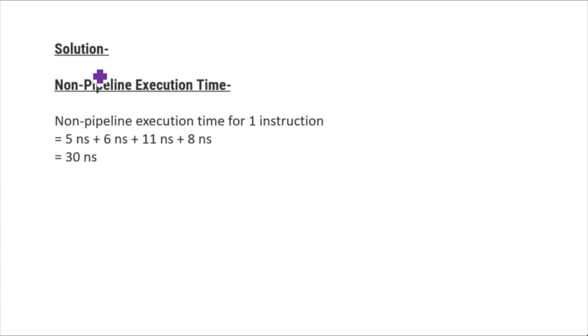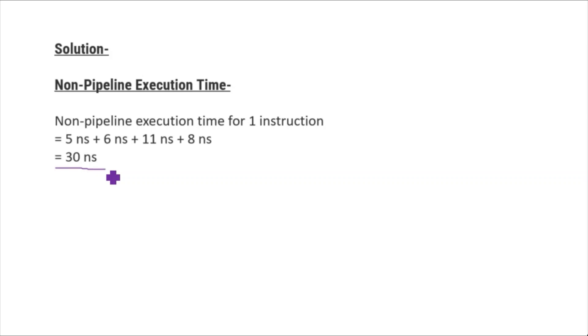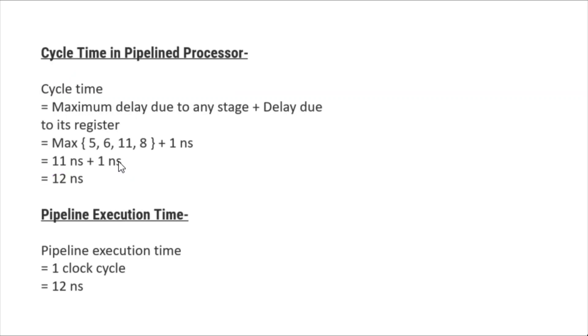For the non-pipeline execution time, it equals the sum of delays in each stage: 5 + 6 + 11 + 8 nanoseconds. This gives a cycle time of 30 nanoseconds for the non-pipeline system.